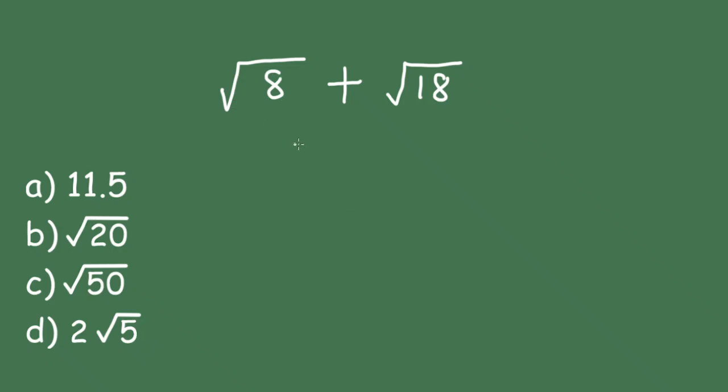So we'll first start off by changing these. This can be written as square root of 4 times 2, still 8, plus the square root of 9 times 2. And this can be broken down to square root of 4 times the square root of 2 plus the square root of 9 times the square root of 2.